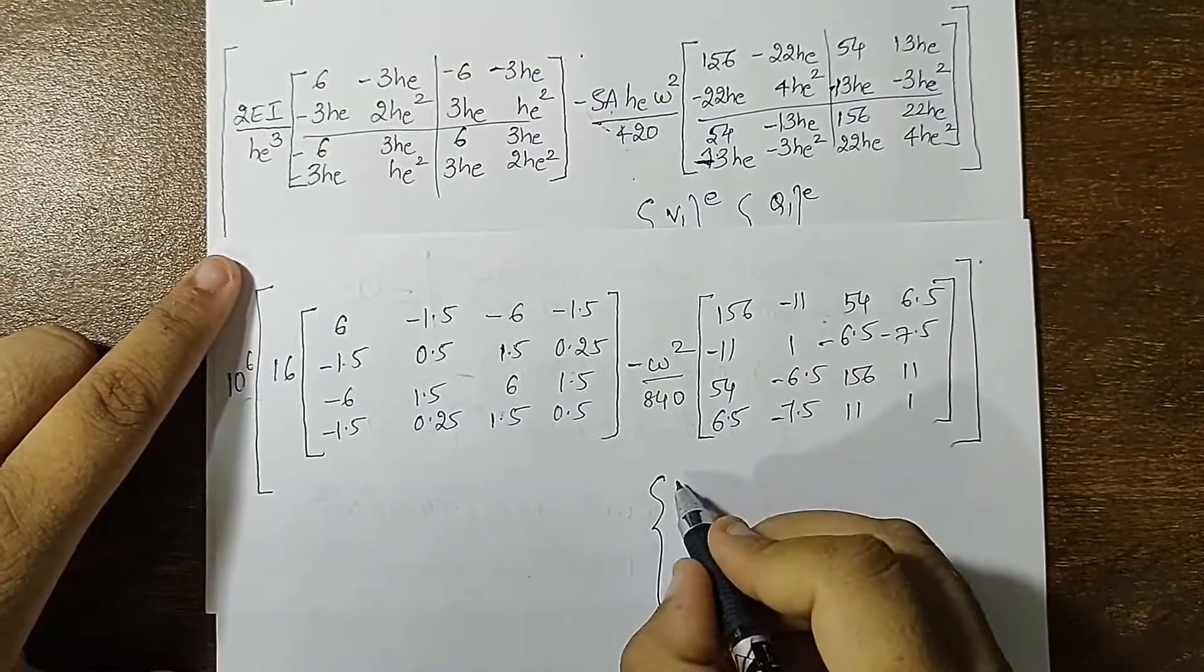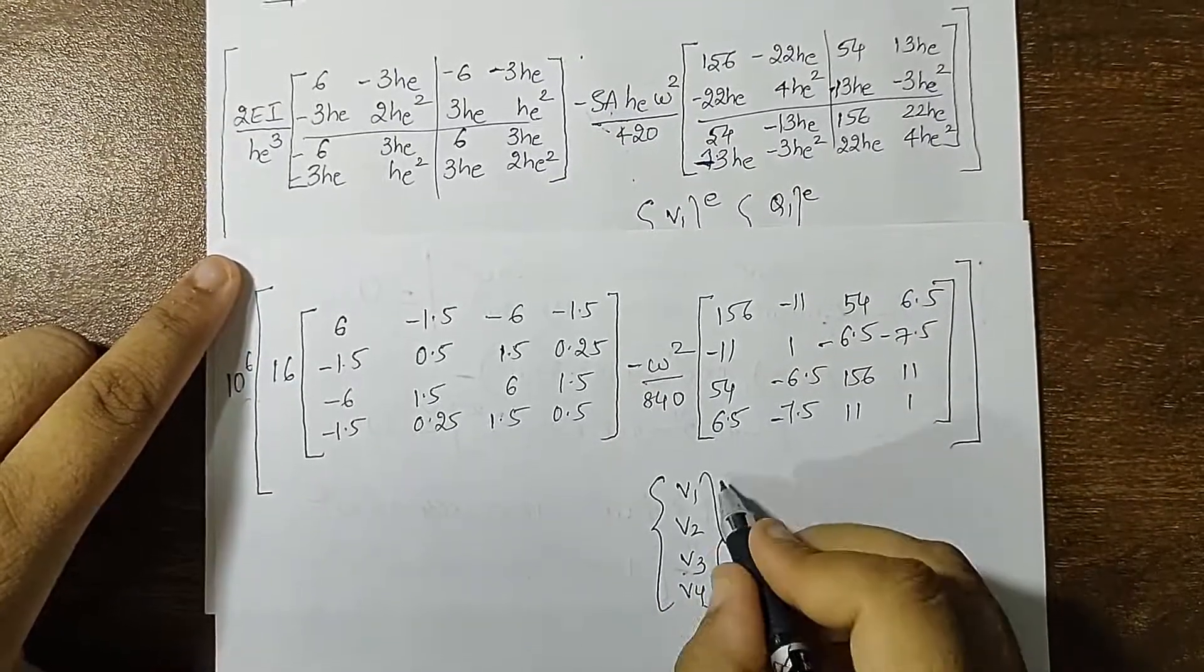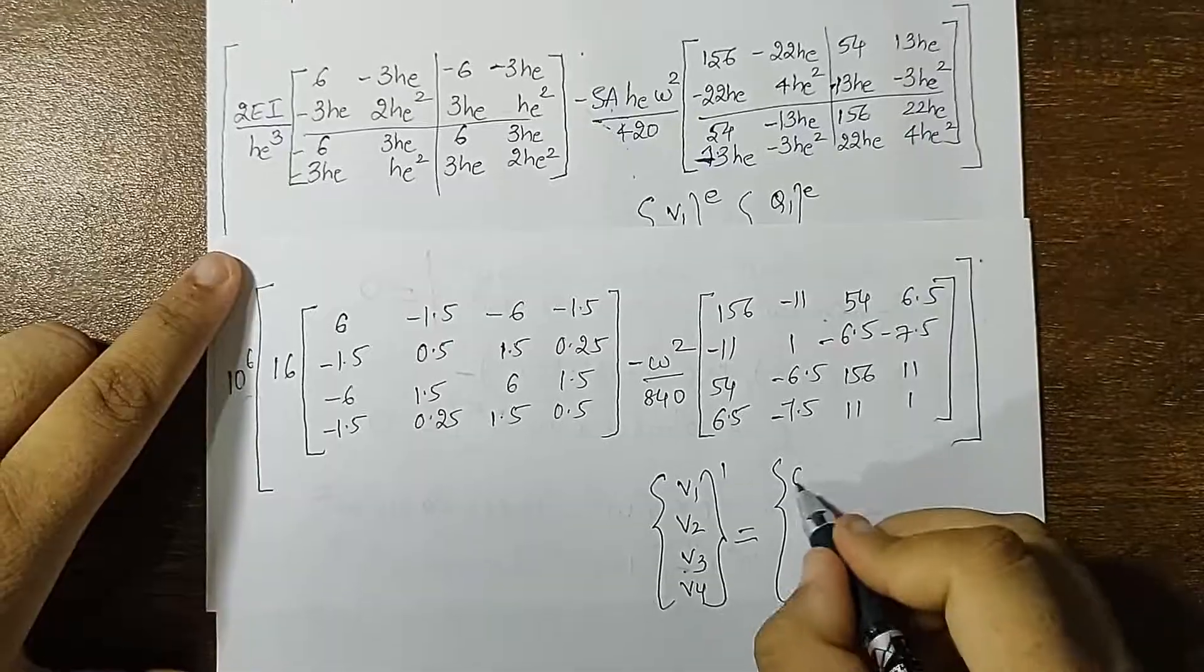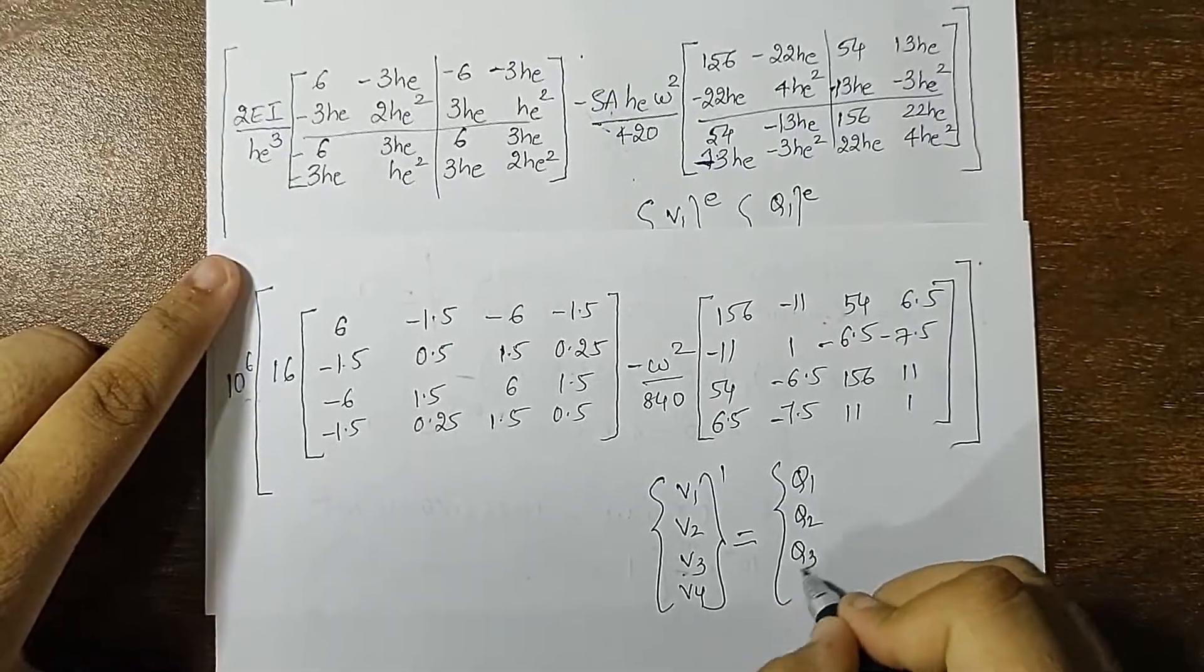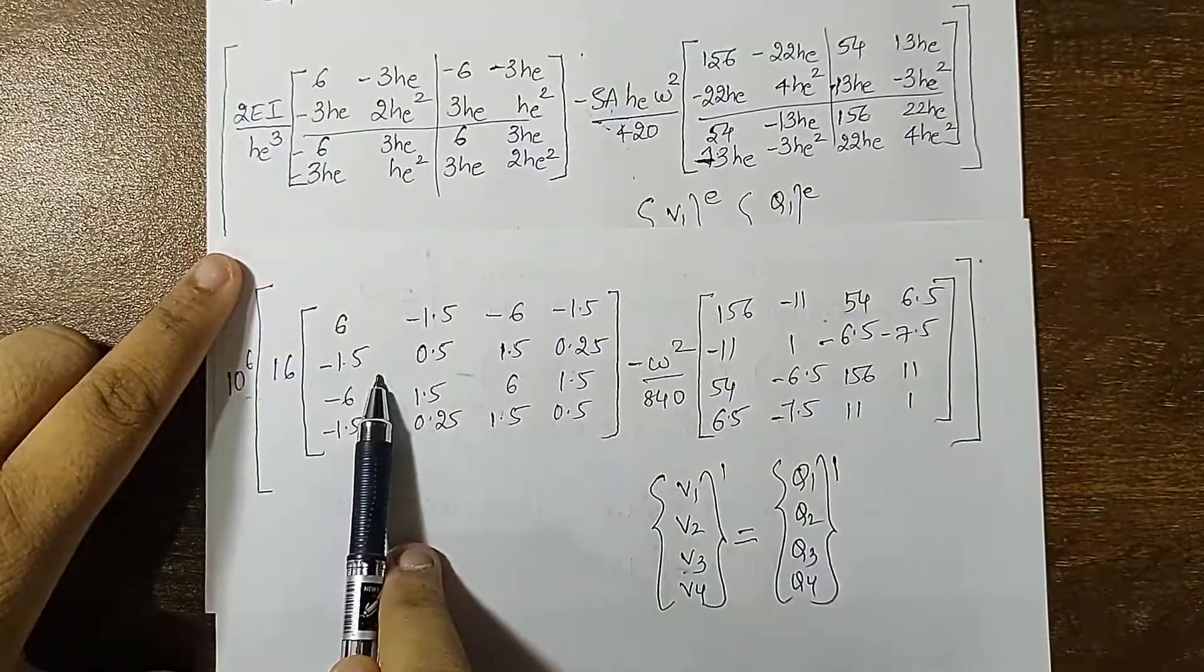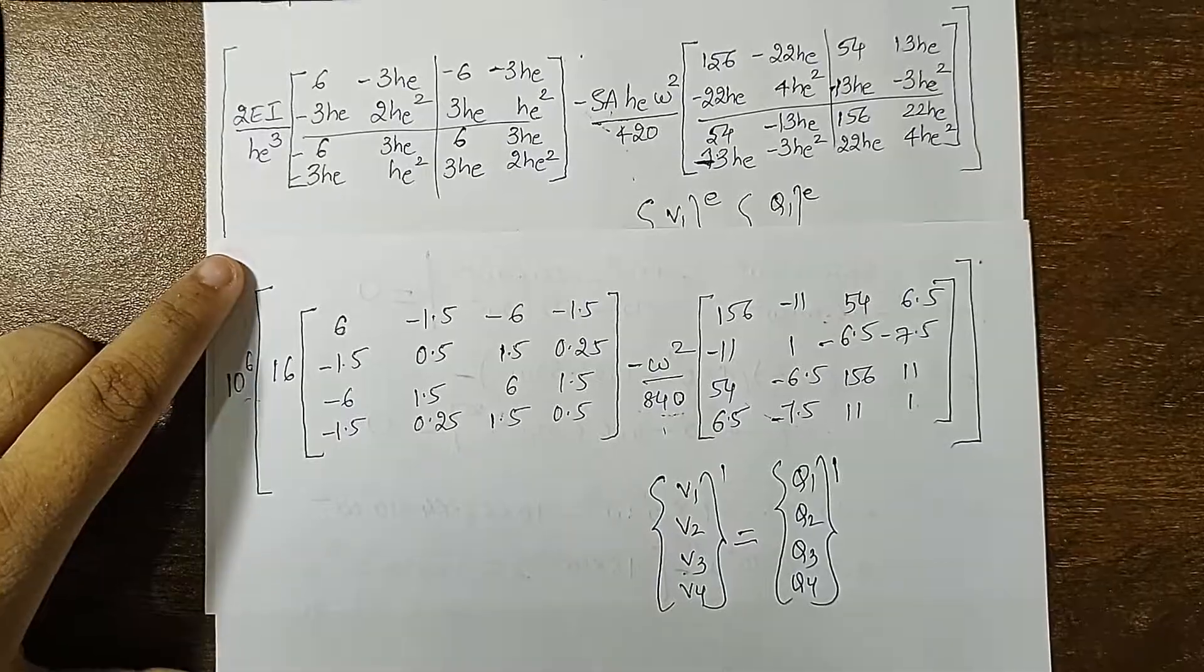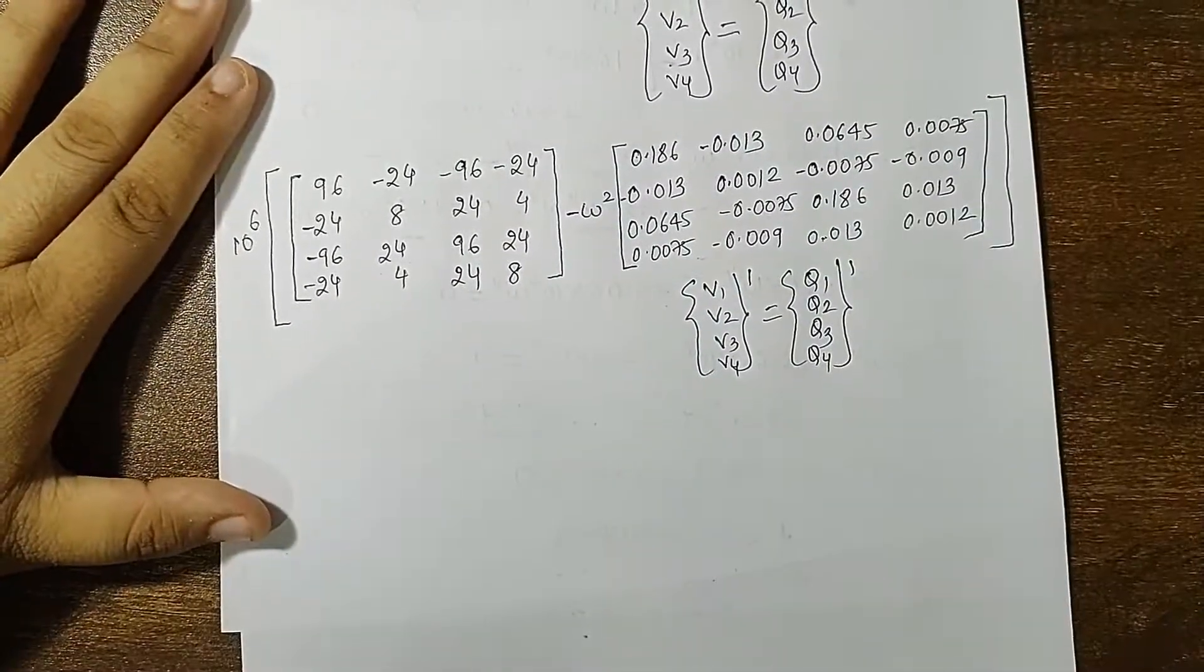This closes here. And what remains is V1, V2, V3, V4 raised to 1 is equal to Q1, Q2, Q3, Q4 raised to 1. Now I am going to multiply this 16 inside and divide these terms by 840. Let's see what I get as the matrix. So this is what I obtained.